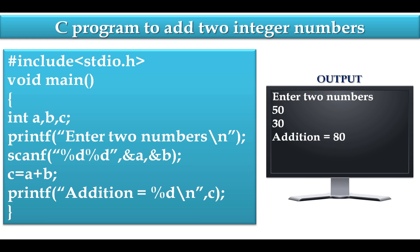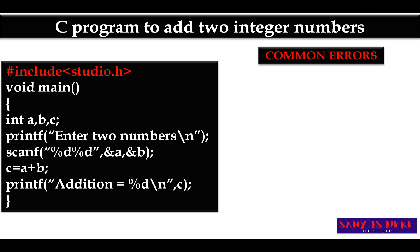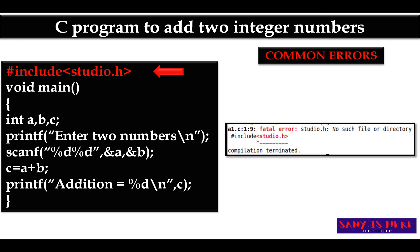Some of you may type wrongly, getting error messages. The first common error is typing 'studio.h' — it is not 'studio.h', it is 'stdio.h', which means standard input/output header file. Don't write it as 'studio.h'. This causes a fatal error, which means the program gets terminated because of this mistake.